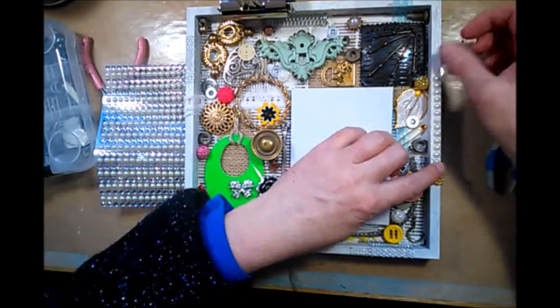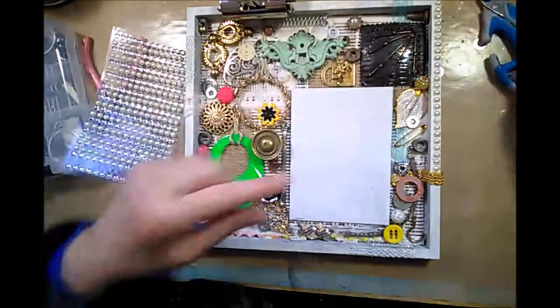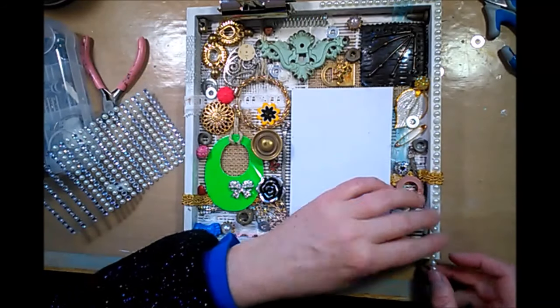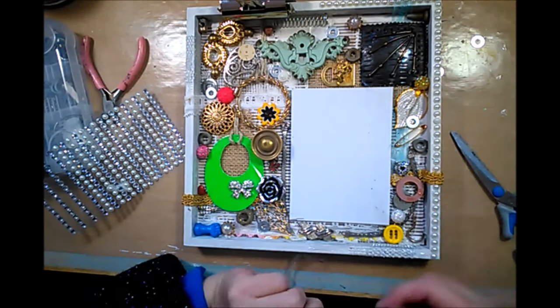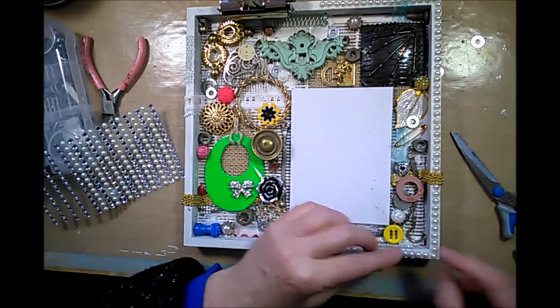Now on the ledge here I'm using these half pearls. This is just a sticker I found at the dollar store and even though it's adhesive I'm again adding my strong glue because I don't want them to move or go anywhere.